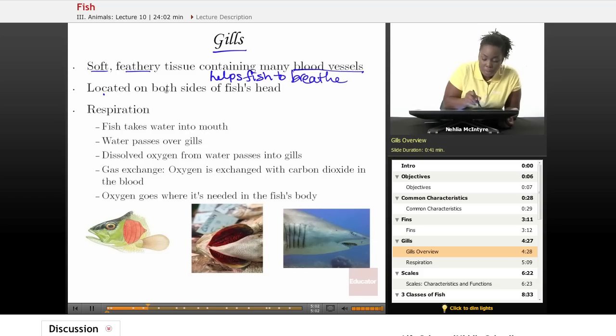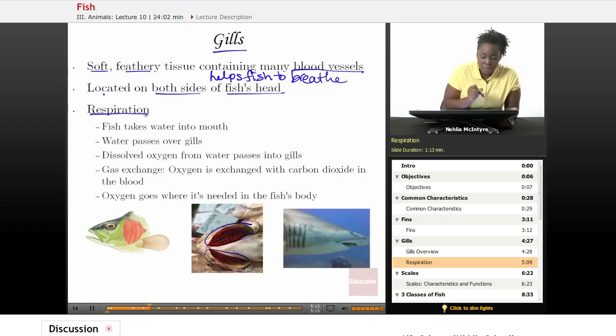The gills are located on both sides of the fish's head. Similar to this picture here, where you've got the gill here, and you've got a gill here on both sides. And again, the gills are used for respiration or for breathing.